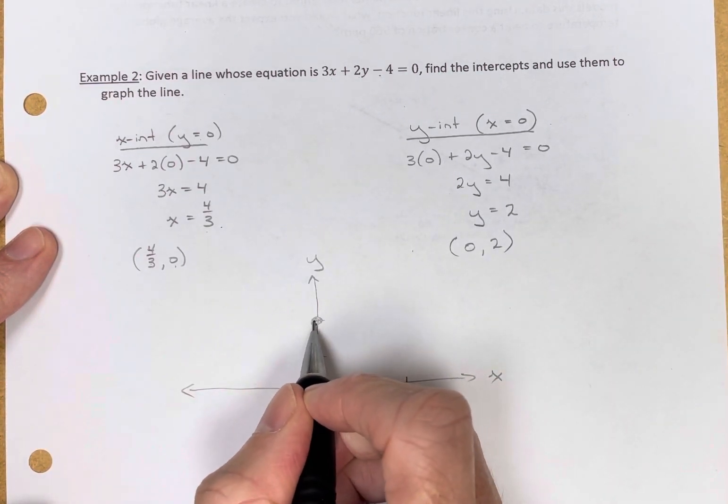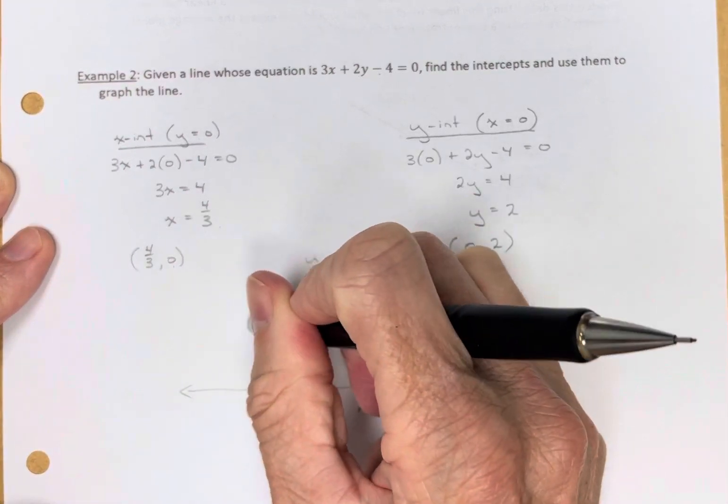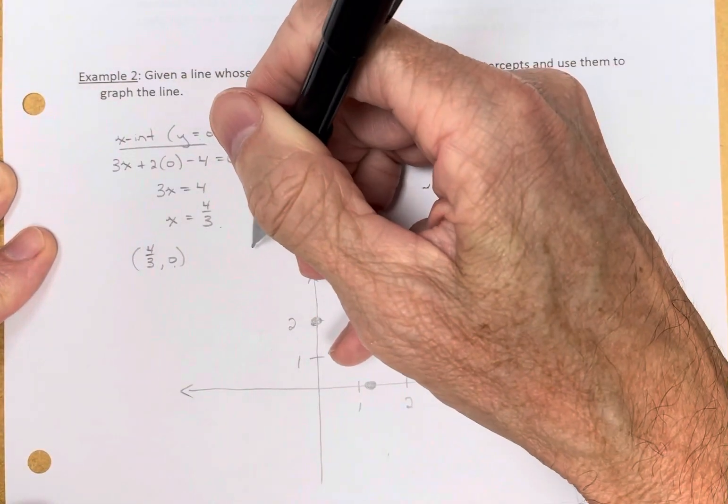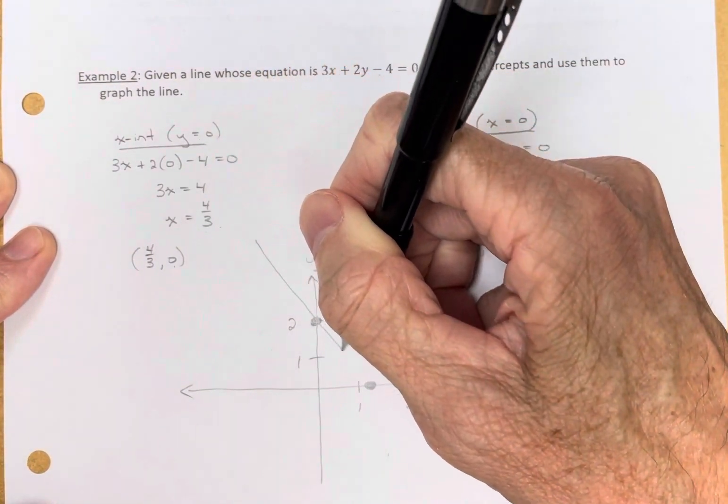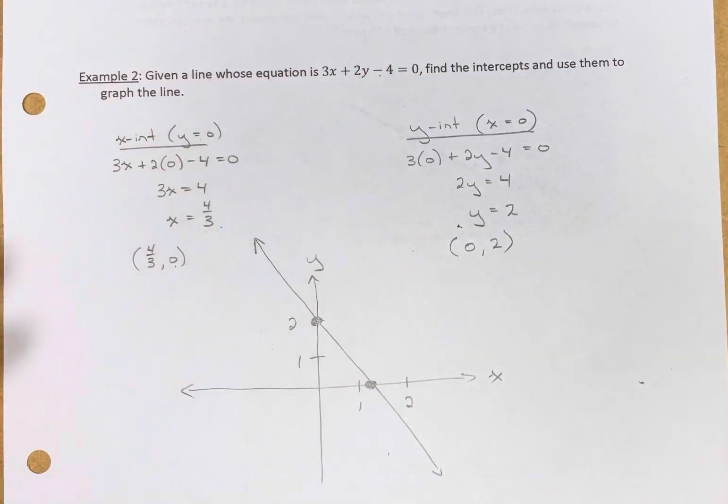So those are my two intercepts, and I simply need to connect them. And I have graphed it using intercepts. Now notice this graph crosses at 2 here and crosses just past 1.